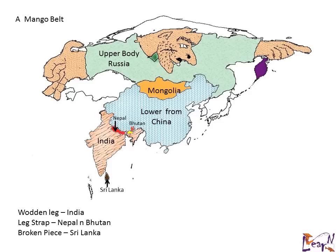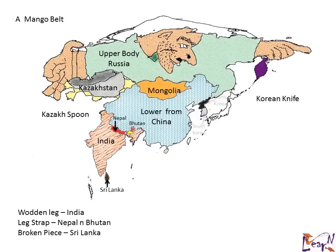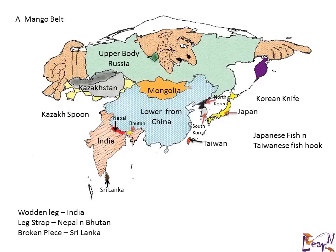Now let's fly in the spoon — it is a Kazakh spoon, which gives you Kazakhstan. Now the knife — there comes the knife, and it's a Korean knife. There we have North Korea and South Korea. And finally the fish and the fish hook: the fish is Japan, and the fish hook is Taiwan.